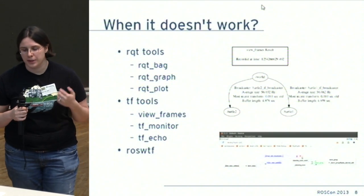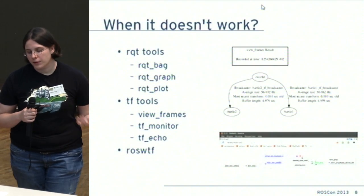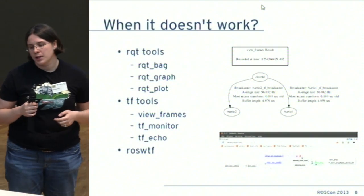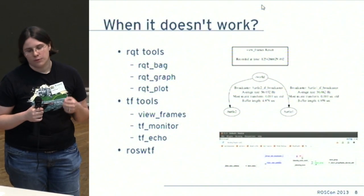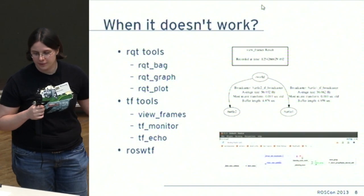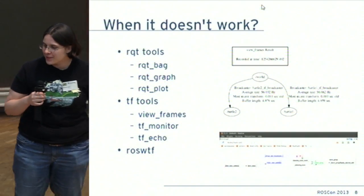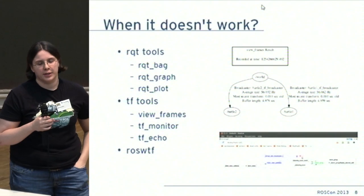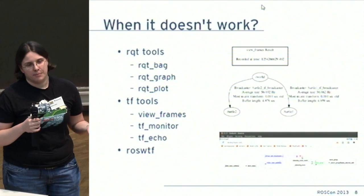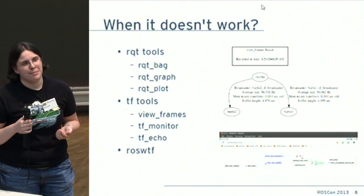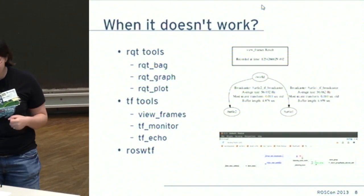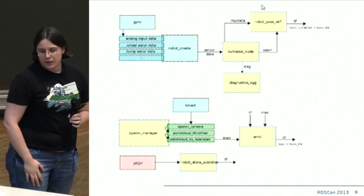Another thing that commonly happens is TF frame problems — either misnaming, confusion, or frames not getting published. TF has a lot of great tools for understanding what's going wrong with your TF frames and your model. There's also roswtf, which is a great tool for helping when you're having network connectivity issues or you've started a master on a different port. The default ROS master port is a palindrome: 11311.